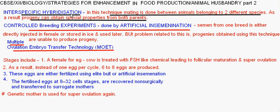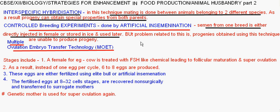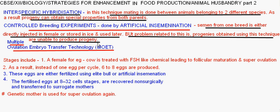Controlled breeding experiments are done by artificial insemination, where semen from one breed is either directly injected into the female of another breed or the same breed, or stored in ice and used later. The progeny obtained using this technique are unable to produce the next generation. To overcome this problem, Multiple Ovulation Embryo Transfer technology — MOET — is used.